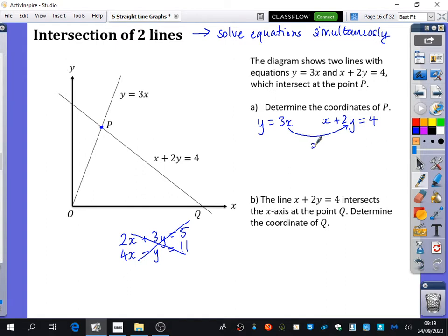I think substitution is going to be better because I already have y equals as one equation. So I can substitute y equals 3x where y is. When I substitute, I would have x plus 2 multiplied by 3x, which equals 4. So I get x plus 6x, which is 7x equals 4, so x equals 4 over 7 or 4 sevenths. Now that's not quite the end because it wants the coordinates of P. I also need to find what y is equal to. How do I find y? Substitute into y equals 3x. So y is 4 over 7 times 3, which is 12 over 7. The coordinates of P are 4 over 7, 12 over 7.